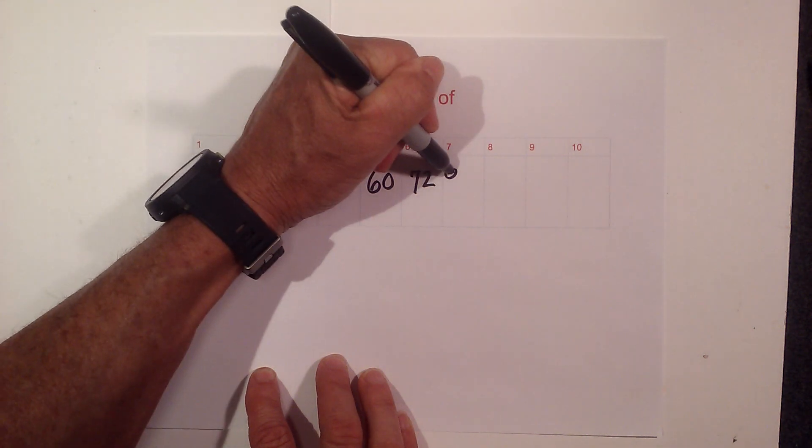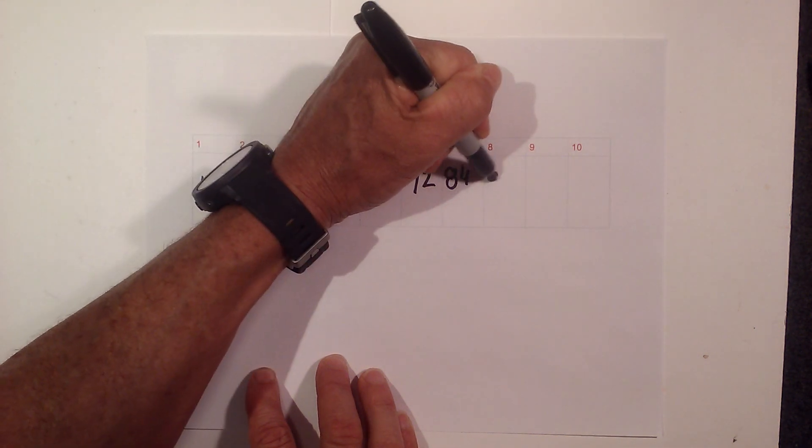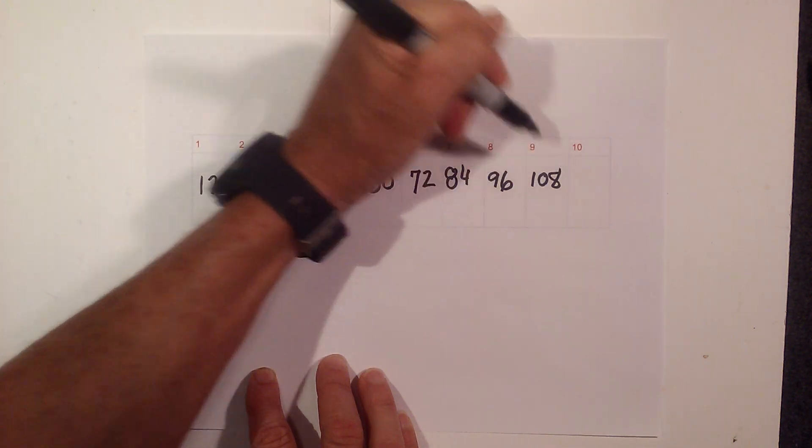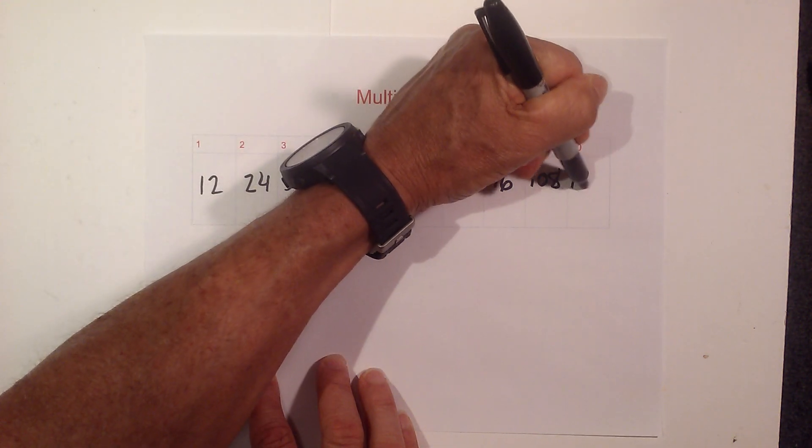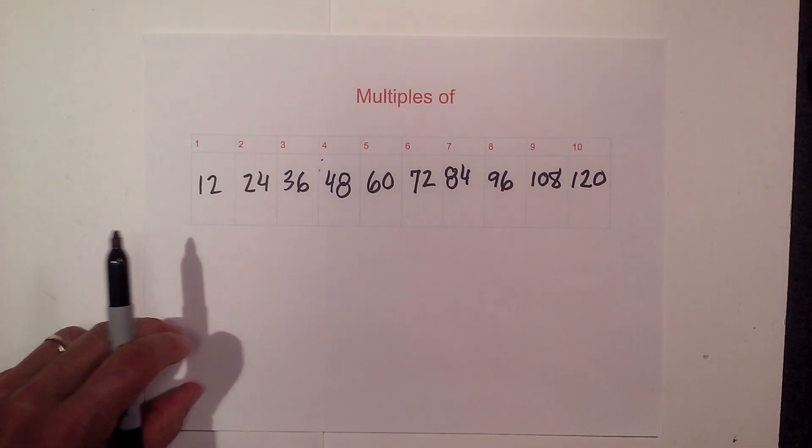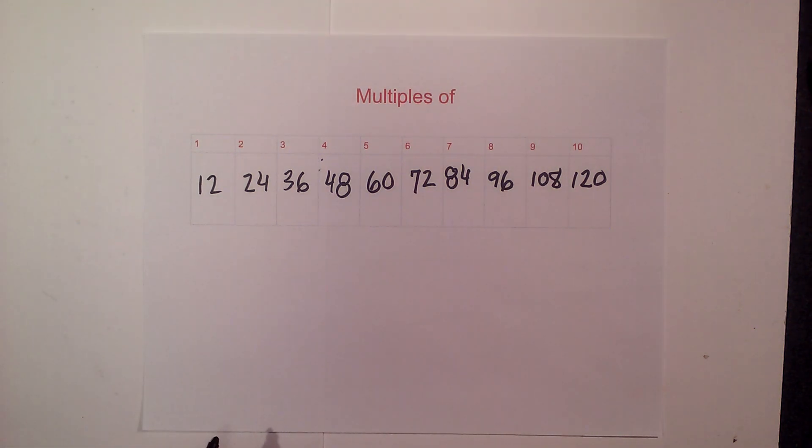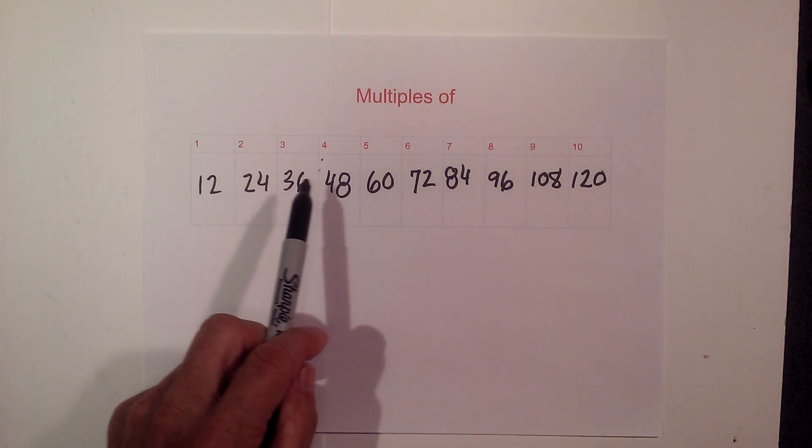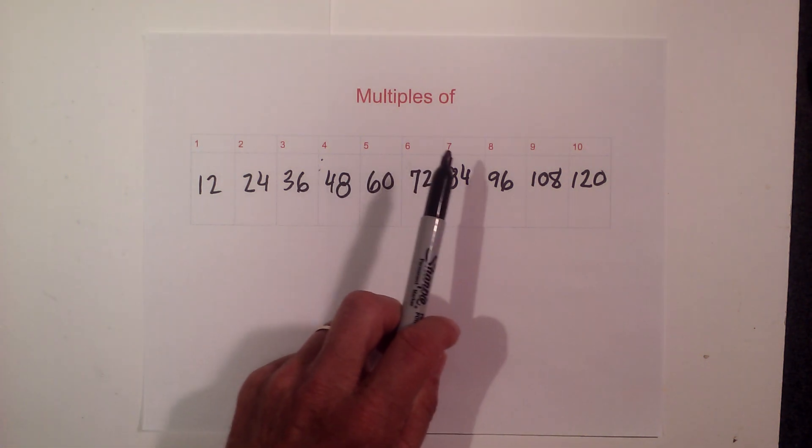72, you're beginning to get the pattern, 84, 96, 108, and 120. So there are the multiples of 12. Goes up by 2 each time: 24, 36, 48, 60, 72, 84, 96, 108, 120.